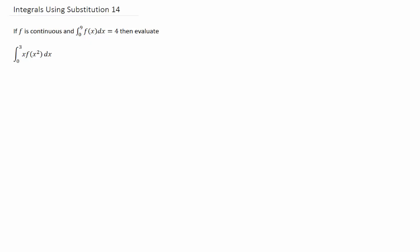This is a slightly amped up version of the problem that we did in the last video. We are given the value of an integral — that's the integral of f of x dx from 0 to 9 — and we're asked to give the value of this integral. You'll notice that the function in this integral that's given is f of x, and the function in our integral is f of x squared.